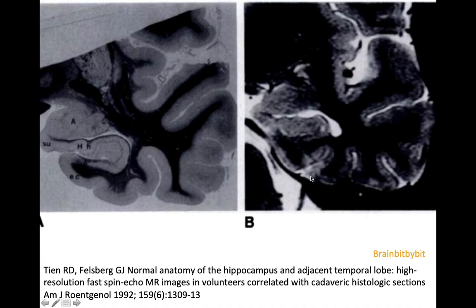This is a very old MRI image from the early 1990s in which the anatomy of temporal lobe epilepsy was explained. You can see the hippocampus with the amygdala above it, and on the macroscopic specimen next to it, you can notice that there are different groups of cells in the amygdala. These different nuclei have different functions and different origins.